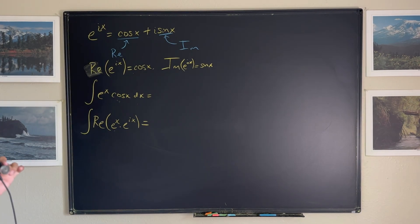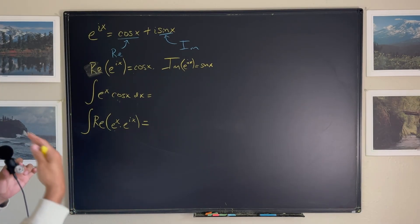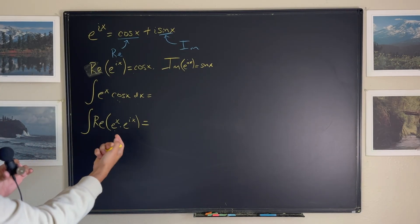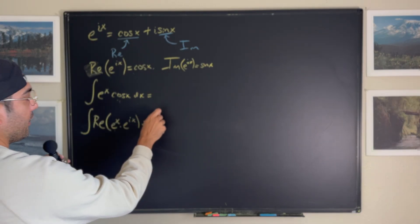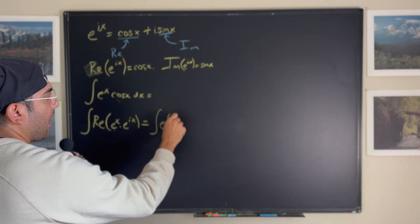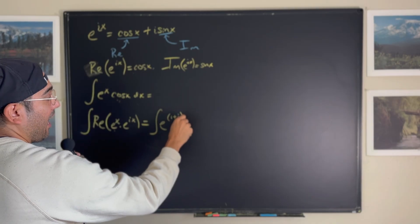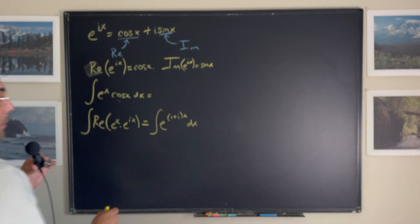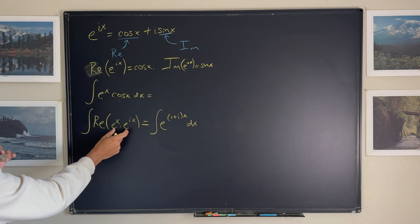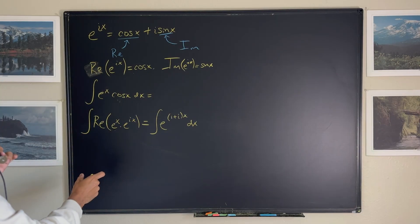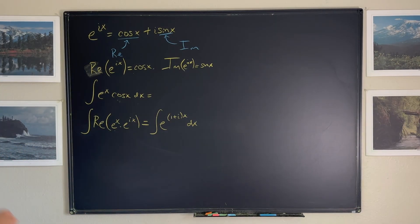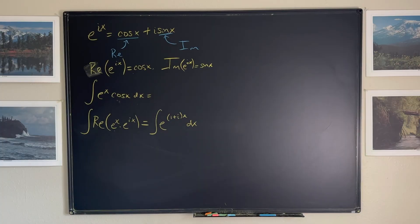Now let's combine these things — this is what makes the Euler formula so powerful. Using properties of exponents, since they have the same base, I can add the exponents together. I factor out x and get the integral of e to the (1+i)x with respect to x. The (1+i) is simply a complex number — nothing scary about that, it's just a number.